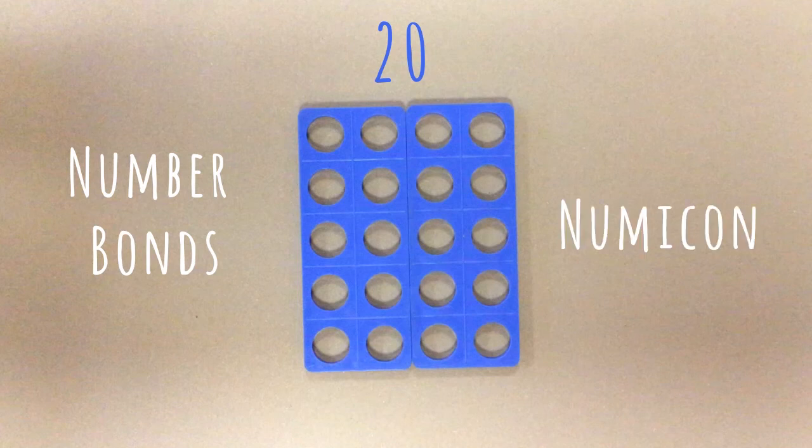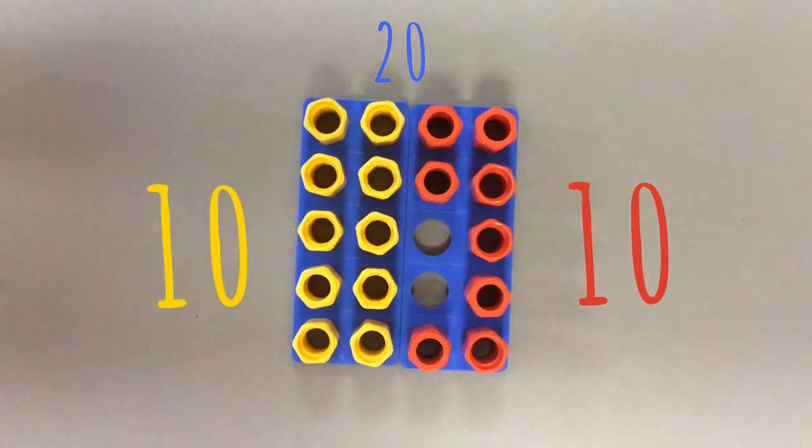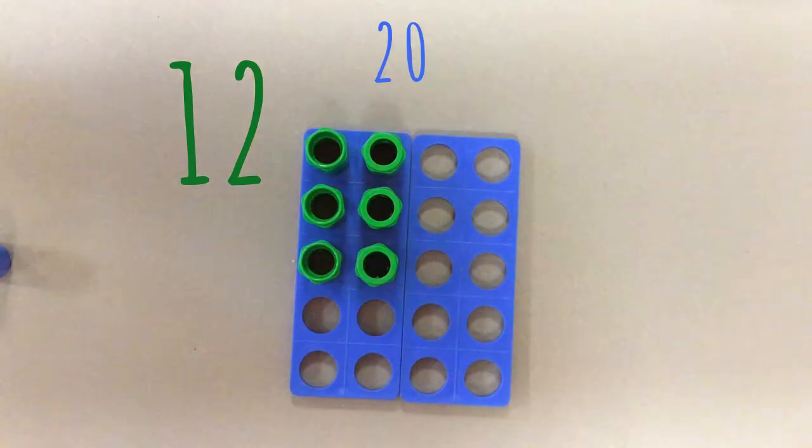Number bonds with numicon. 10 and 10. 8 and 12.